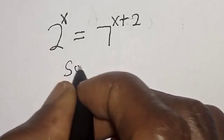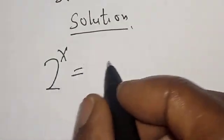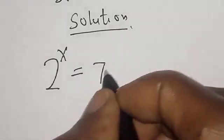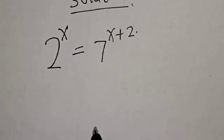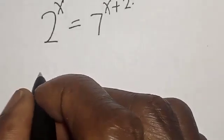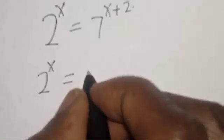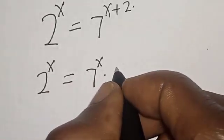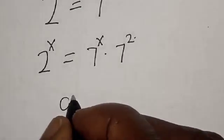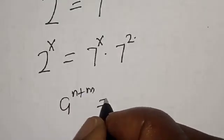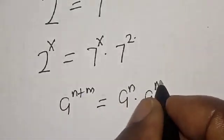Solution. We have the given equation: 2 raised to power s is equal to 7 raised to power s plus 2. This can be expressed as 2 raised to power s is equal to 7 raised to power s multiplied by 7 raised to power 2, using the rule that a raised to power n plus m equals a raised to power n multiplied by a raised to power m.